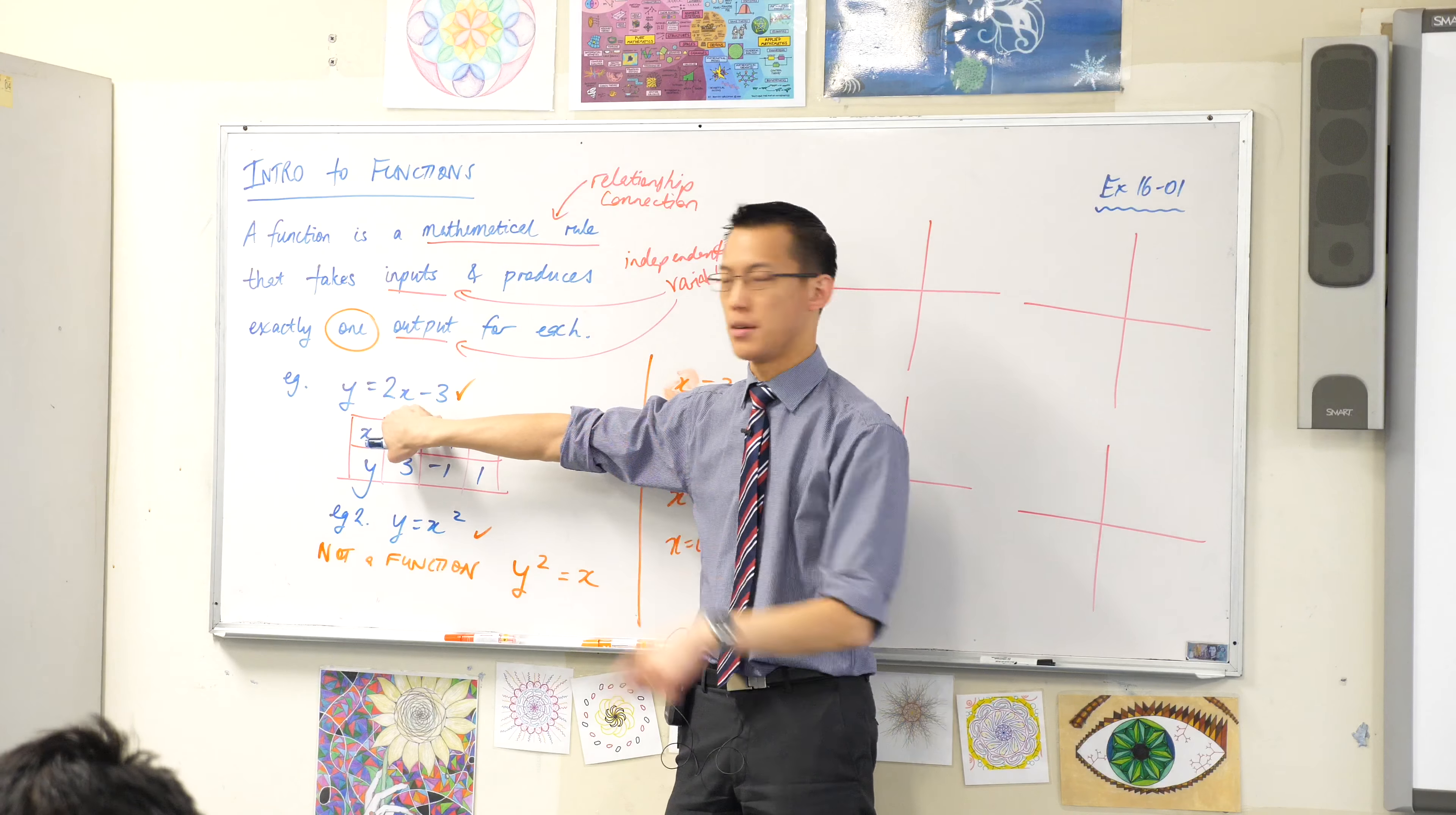But the second I move it a little bit like this, now we're in trouble. It hits twice. Once, twice. So this single input gets two outputs and it keeps on getting two all the way. Does that make sense?